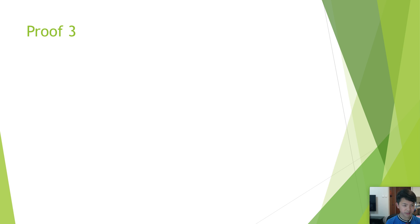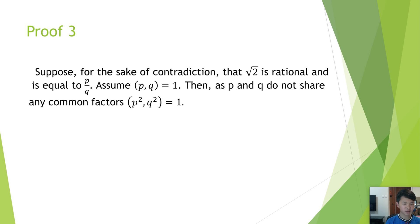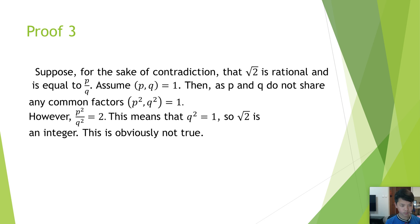Proof 3. Suppose for the sake of contradiction that the square root of 2 is rational and is equal to p over q. Assume that the gcd of p and q is 1. Then, as p and q do not share any common prime factors, the gcd of p squared and q squared is also 1. However, p squared over q squared is 2. This means that q squared equals 1, so the square root of 2 is an integer — which is obviously not true.